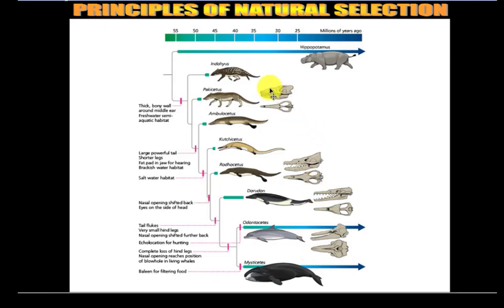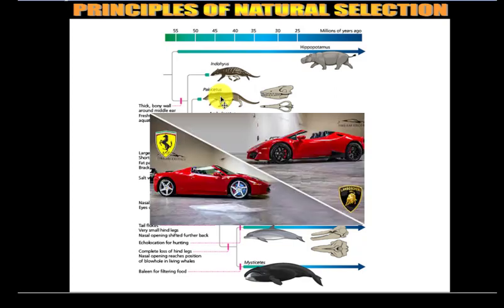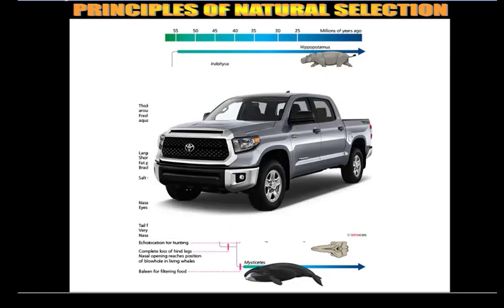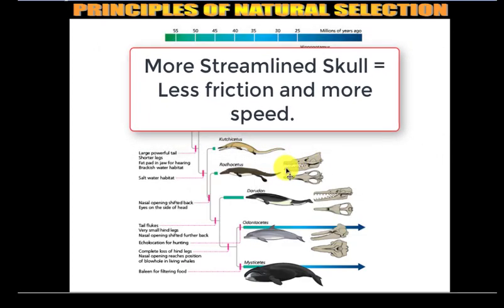Another trait is skull shape. The Pachocetus skull is broad in terms of height, but as we look at later forms, the skulls get more streamlined and narrower — helping the organism move through the water faster. Think of fast cars: a Ferrari or Lamborghini has a front end designed for speed, allowing air to pass right over it. Racing a Toyota Tundra against a Ferrari, the Tundra loses because its bulky front catches wind and friction. Similarly, whale skulls change over time, becoming more streamlined to better fit swimming through an aquatic environment faster.